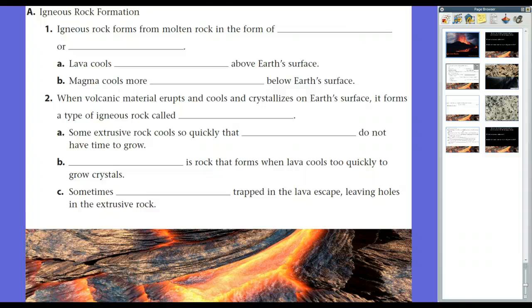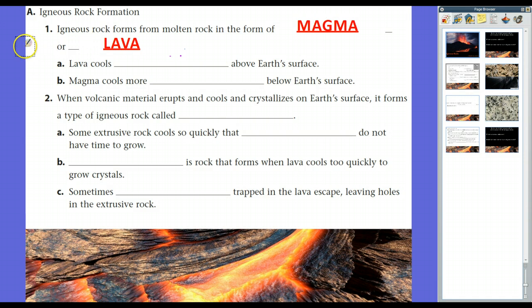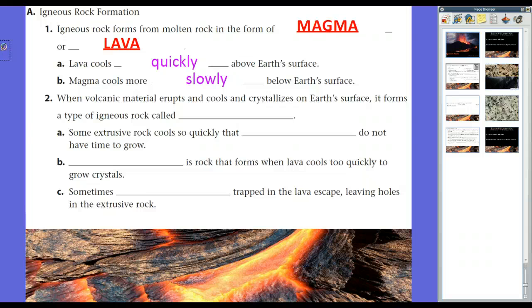Igneous rocks, of course, form from molten rock in the form of either magma or lava. We've gone over this when we talked about minerals, we talked about this in the last lesson. Lava, of course, is molten rock that cools quickly above the Earth's surface, while magma cools more slowly below the Earth's surface. Magma, of course, is molten rock below the Earth's surface. Lava is the molten rock above the Earth's surface. And the term igneous actually comes from the Latin word for fire. Ignite, you know, the word ignite, means fire. So igneous means coming from fire. So that's how you can remember how these rocks are classified. They come from stuff that's really, really hot, molten rock that is.